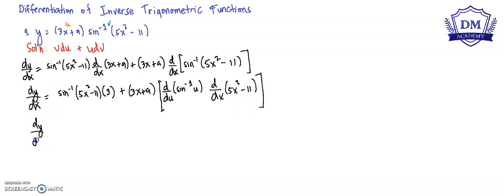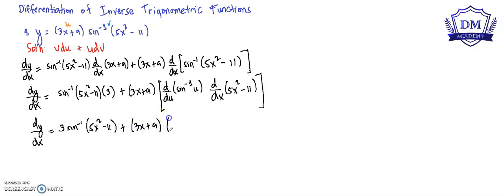So our dy/dx is equal to the inverse sine of (5x² - 11) multiplied by 3, plus (3x + 9) multiplied by the derivative of arcsin(u), which is 1 over the square root of (1 - u²), multiplied by the derivative of (5x² - 11), which is 10x.